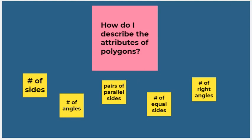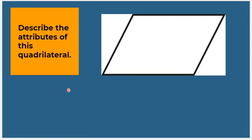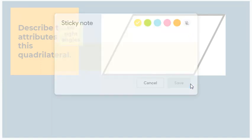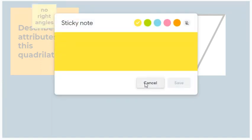Let's practice describing the attributes of this quadrilateral. We already know it has four sides. Does it have any right angles? No it doesn't, so we're going to write 'no right angles' as one of our attributes.